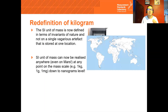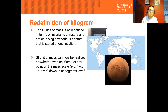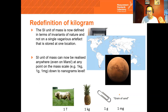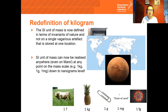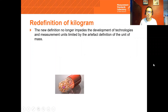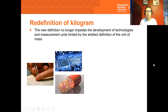Instead, SI units of mass can now be realized anywhere on earth, even on Mars, at any point on the mass scale — for example, 1 kilogram down to 1 gram, 1 milligram, nanograms, or maybe to one millionth of a nanogram, which is the approximate mass of the notorious coronavirus. Accurate methods are being developed at this scale. The new definition allows the advancement of technologies such as pharmaceuticals, electronics, and nanotechnology, and no longer impedes improvements of other measurement units.